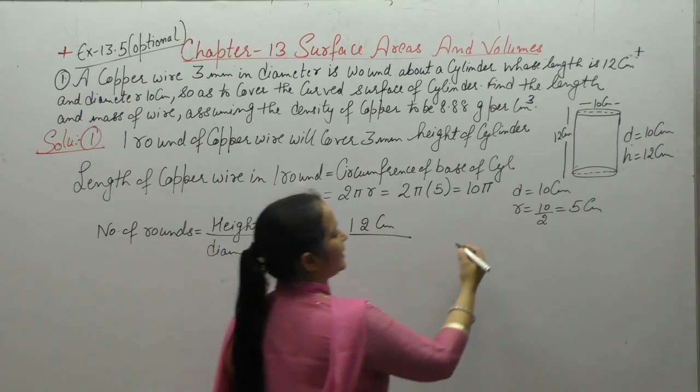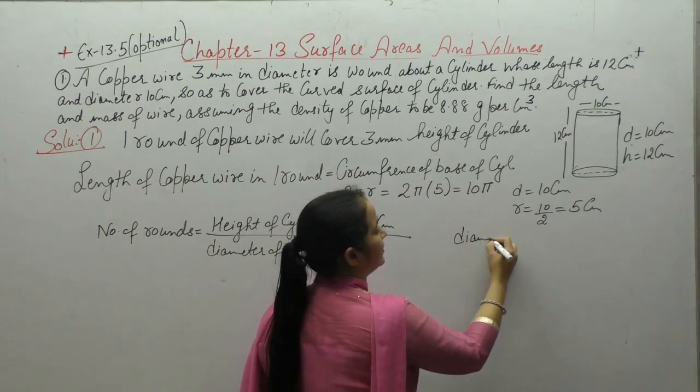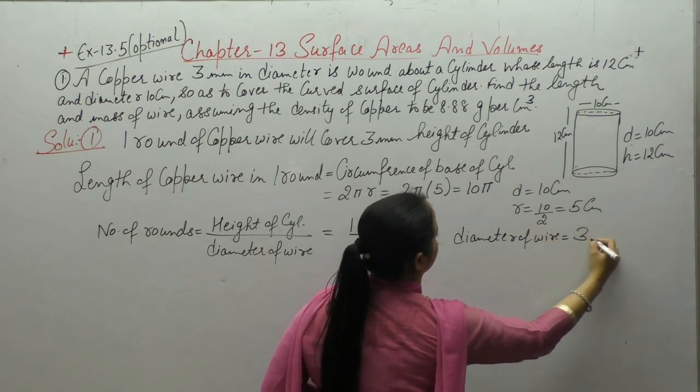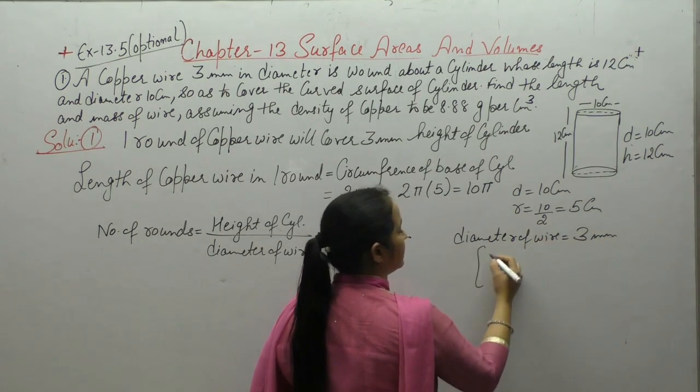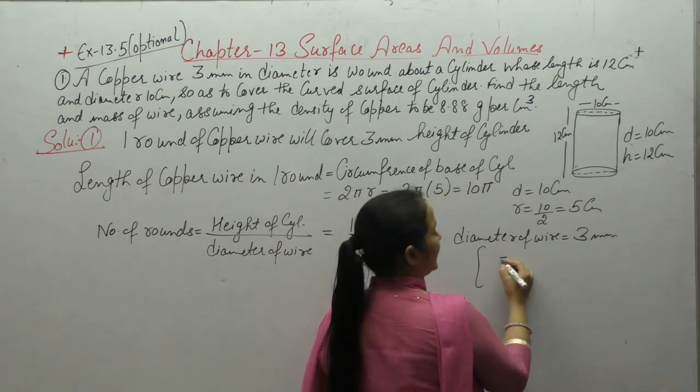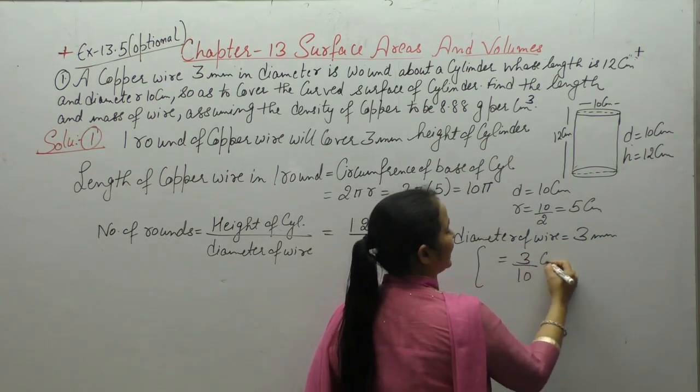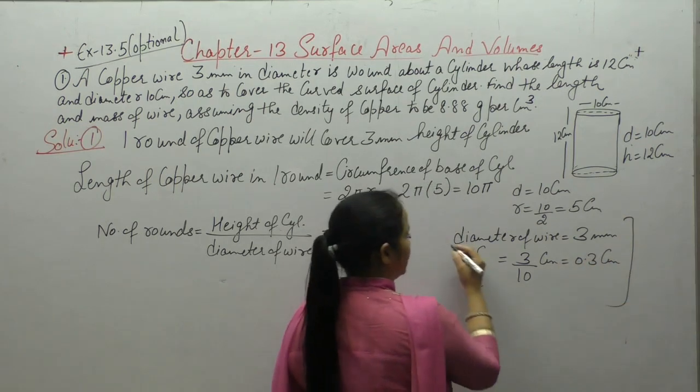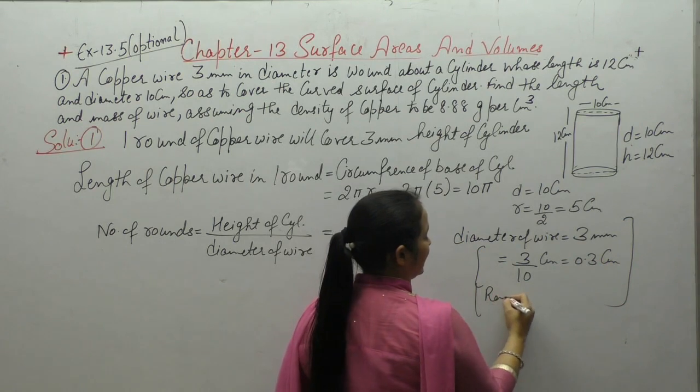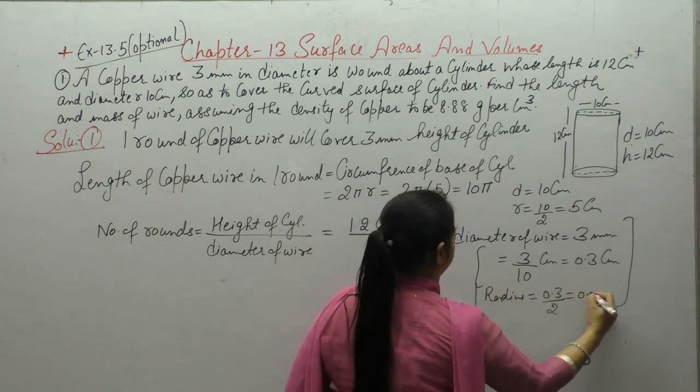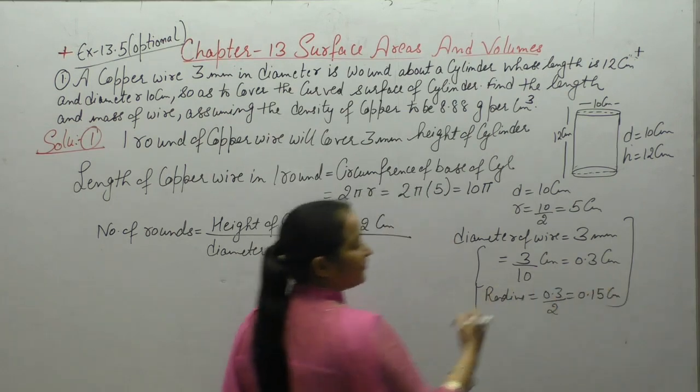Now diameter of wire is given as 3mm. And we know if we convert it to cm, 3÷10 = 0.3cm.